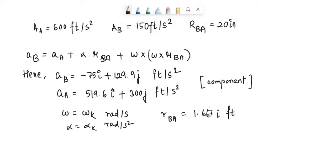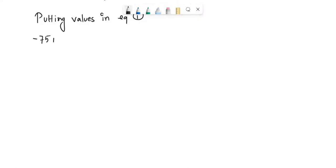Putting these values in equation 1, the result would be -75i + 129.9j = (519.6i + 300j) + Wk×(Wk×1.667i).